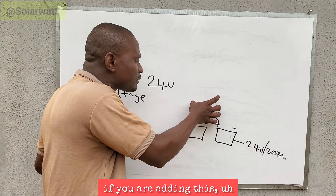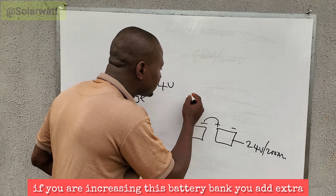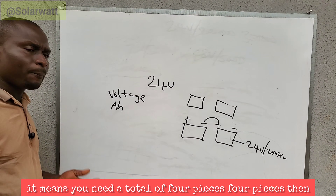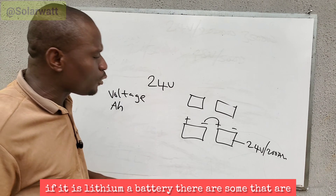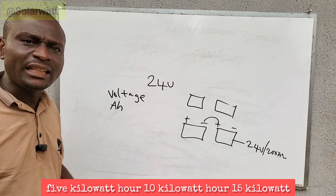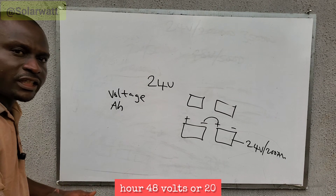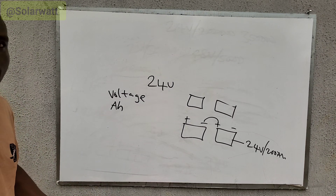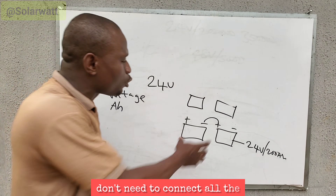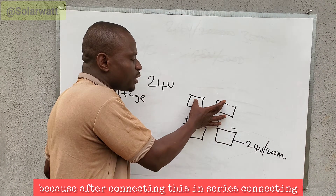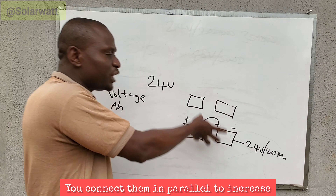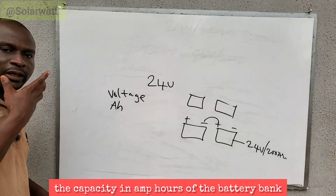When increasing the battery bank, you add extra batteries — for example, two more for a 24V system — making it four pieces total. For lithium batteries rated at 5 kWh, 10 kWh, or 15 kWh at 48V or 24V, you can connect a single 24V lithium battery directly to a 24V inverter. After connecting batteries in series to reach your system voltage, you then connect additional sets in parallel to increase the capacity in amp hours of the battery bank.